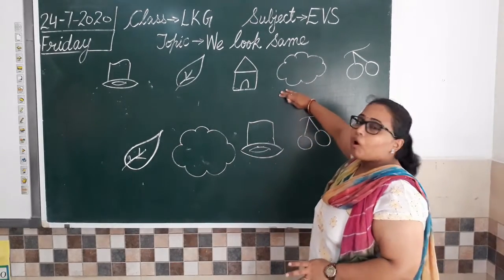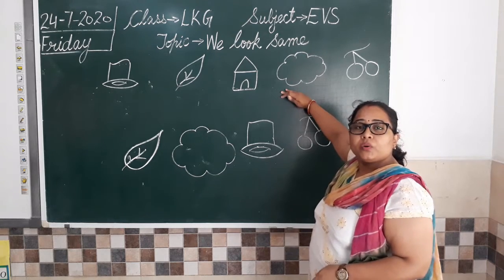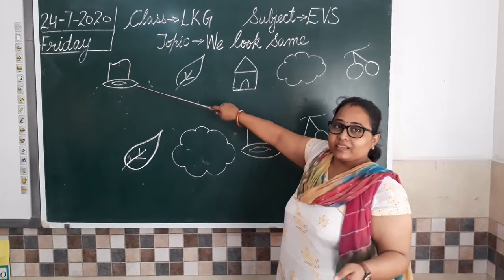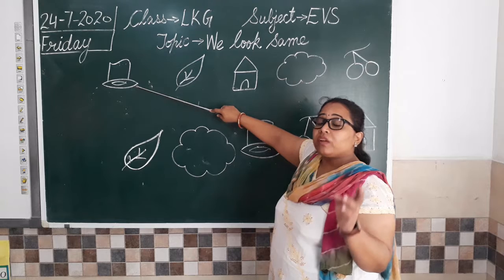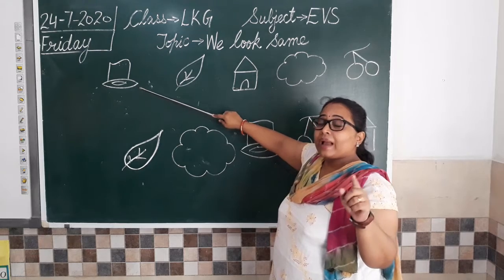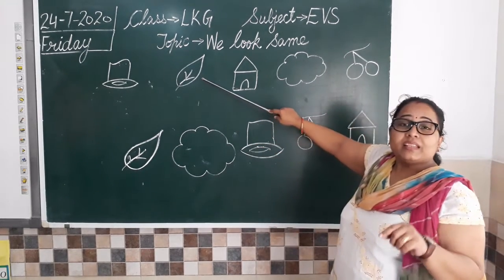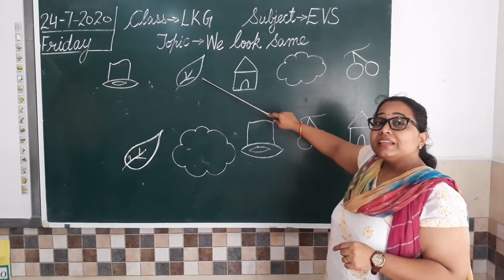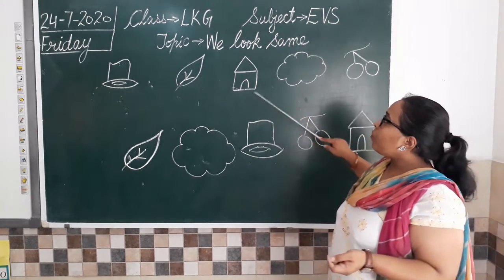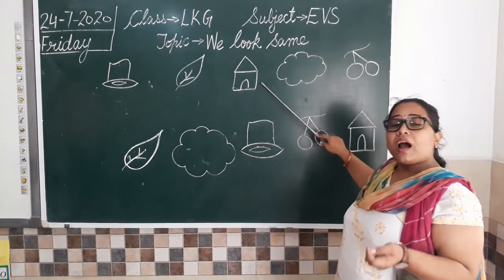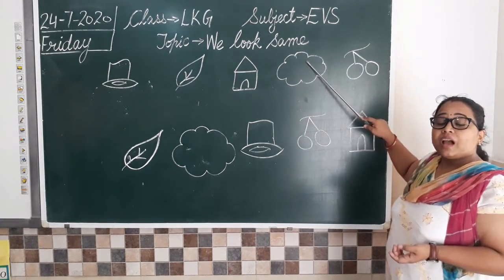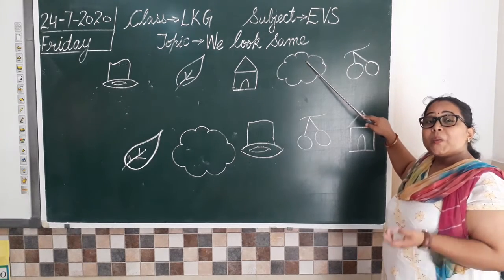First we have to see all these pictures here. This is a hat — we did the alphabet X, and we did this hat in black color. You remember, black color hat. What is this? It's a leaf, and what is the color of leaf? Green color. So we are revising all the colors also — it's a green leaf. Now what is this? A hat — hat can be of any color of your choice. Now what's this? A cloud, and what is the color of cloud? White color.